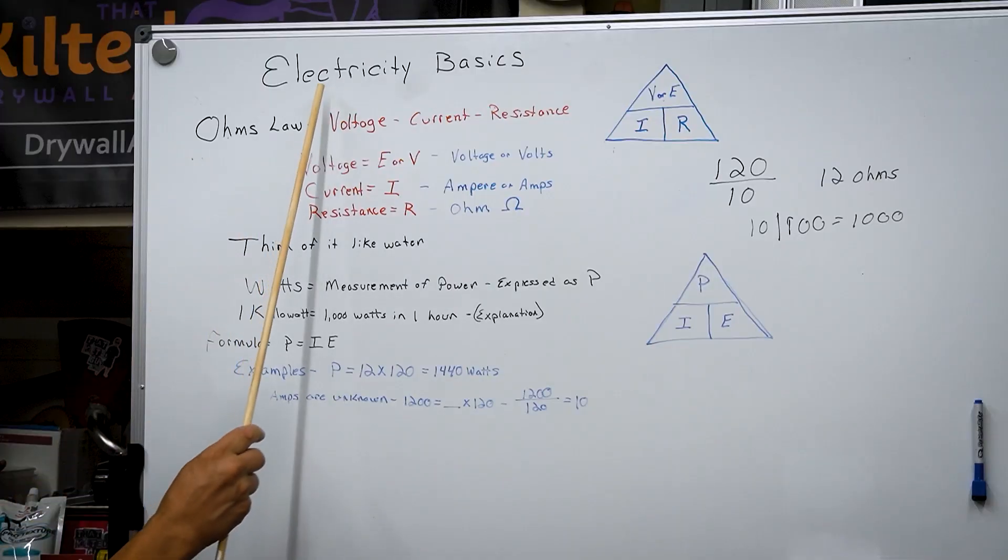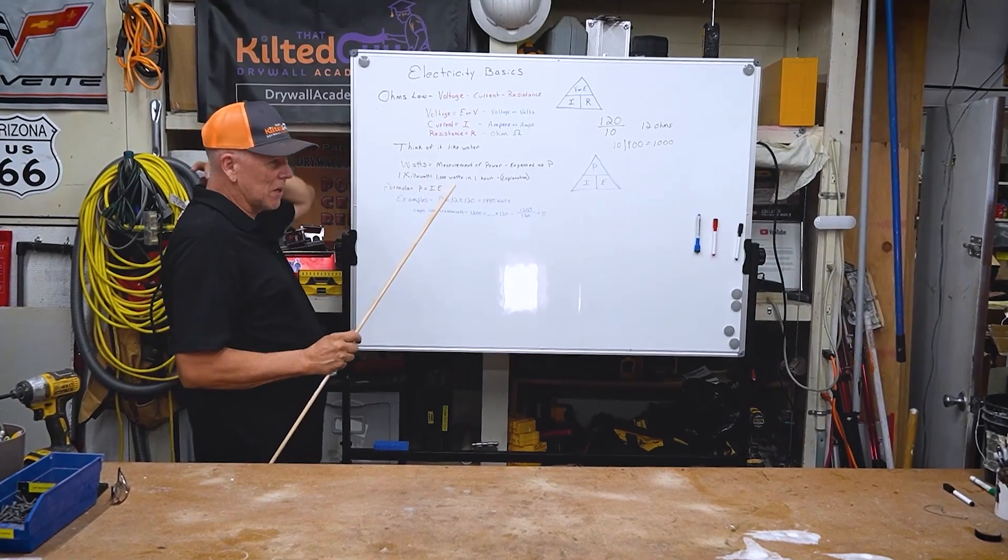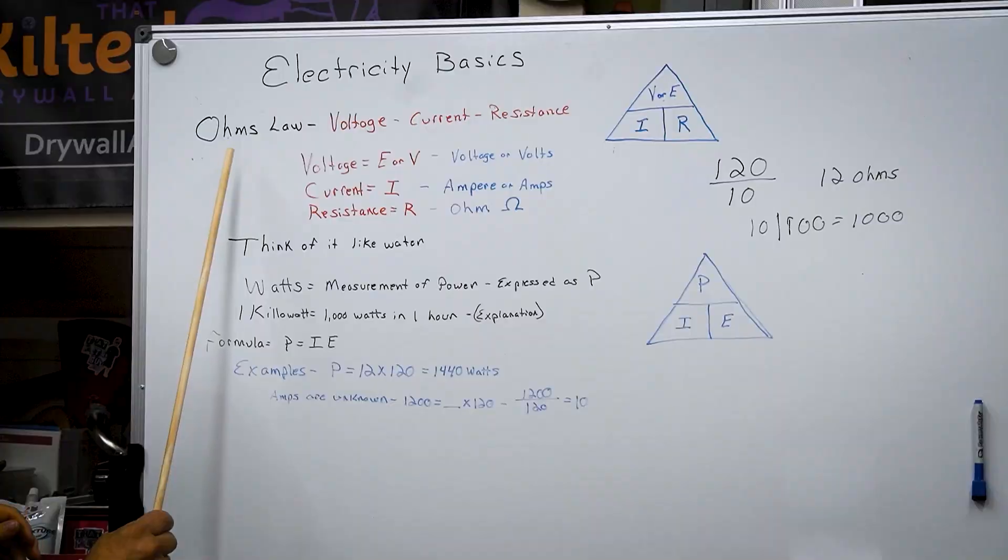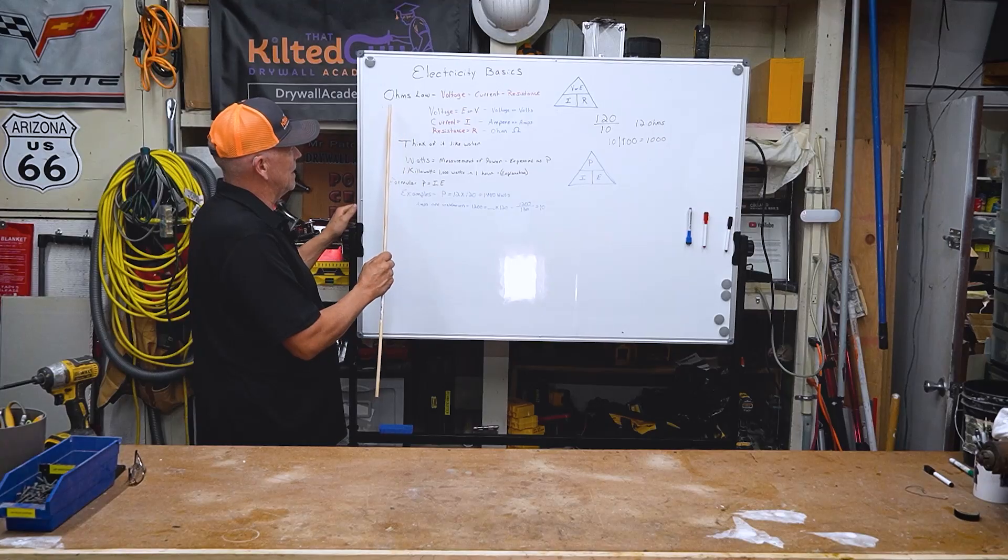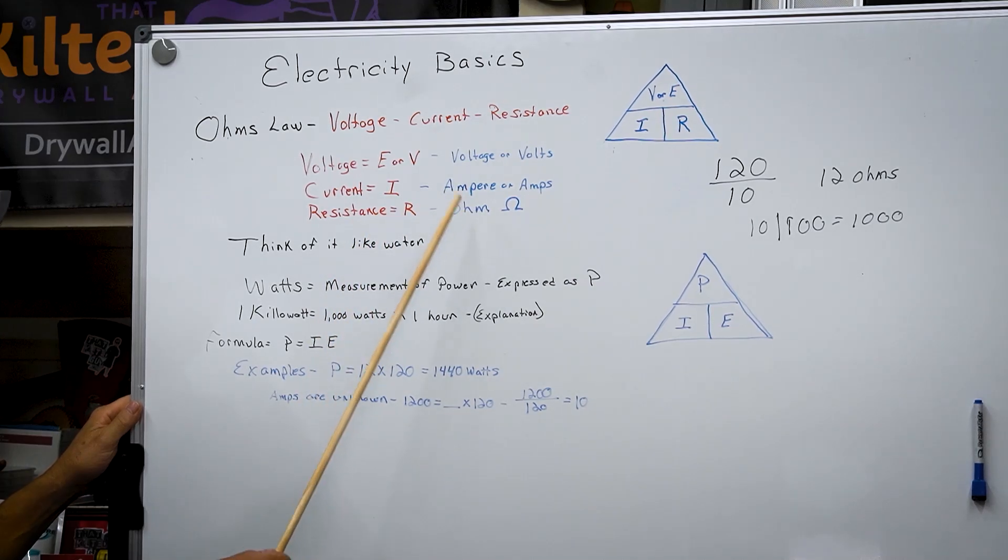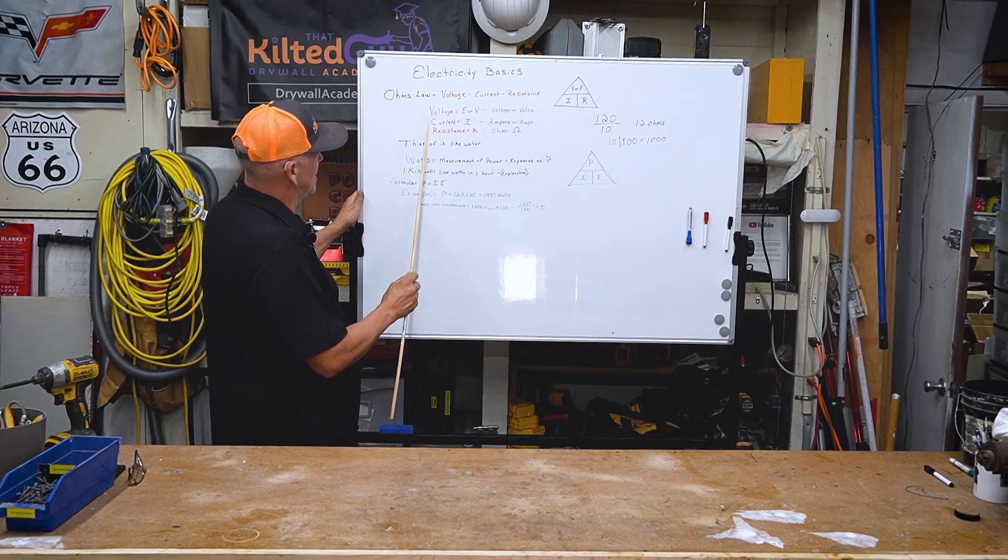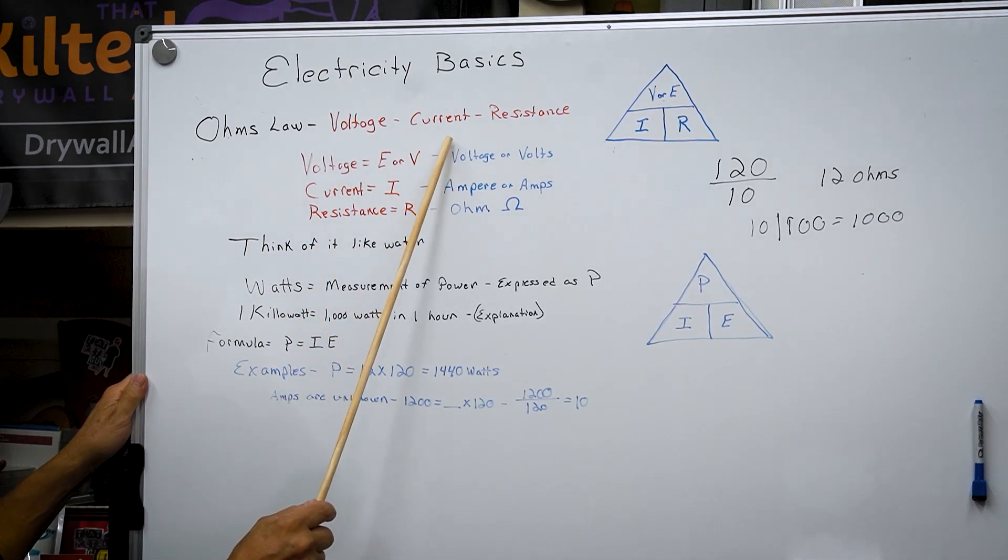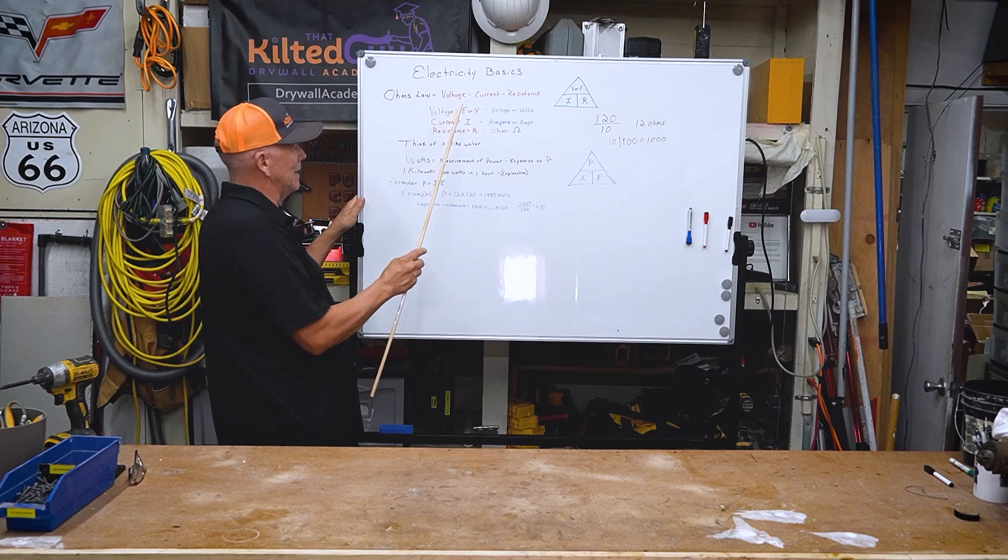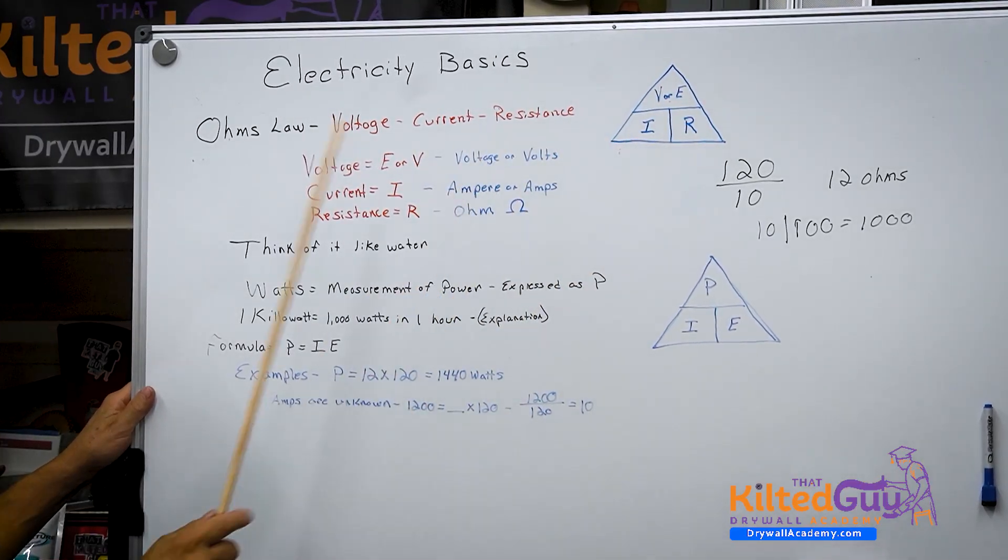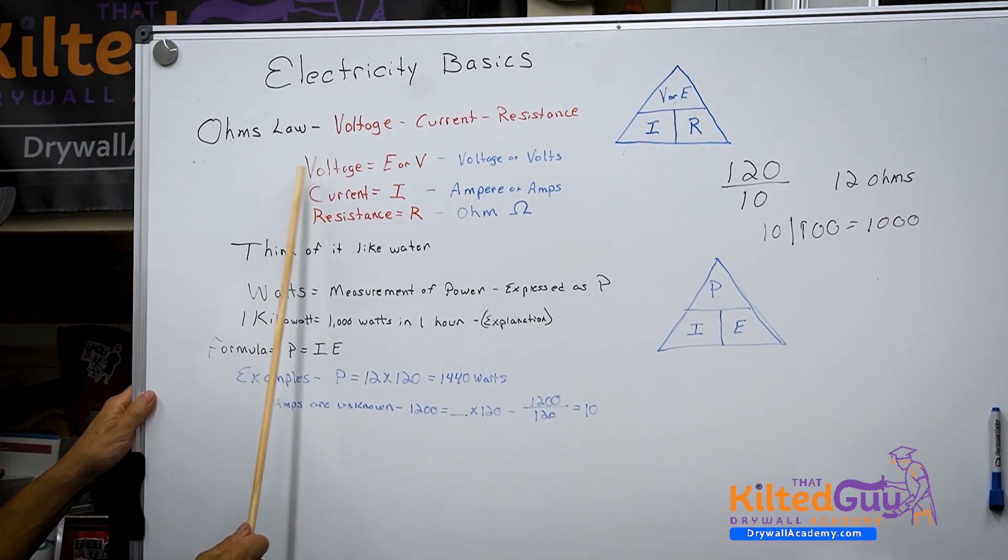So we're gonna talk about electricity basics. First thing we're gonna talk about is one of the most common things in electricity, which is called Ohm's Law. By the way, ohms is the measure of resistance. Ohm's Law is the relationship between voltage, current, and resistance.